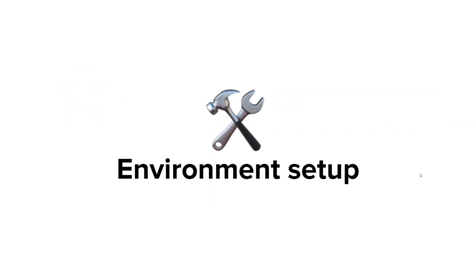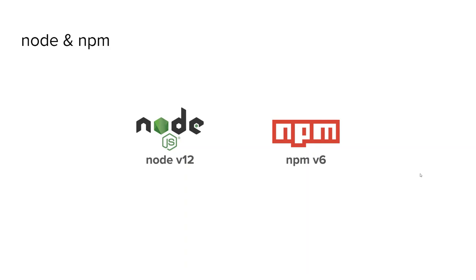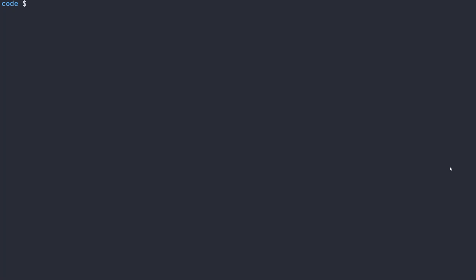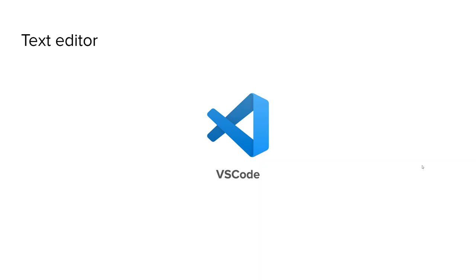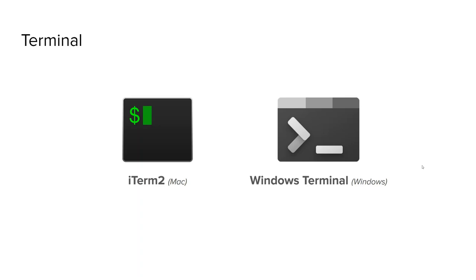This lesson quickly covers some of the environment tooling used throughout the rest of the course. This course was created with Node version 12 and npm version 6, however any recent version should be sufficient. A quick way to check your version is to run node -v in your terminal. If you don't already have Node and npm installed, follow the steps for installing them using a node version manager, which allows you to install multiple versions of Node and seamlessly switch between them. Any editor should be sufficient for this course, however I will be using VS Code because it has great TypeScript support.